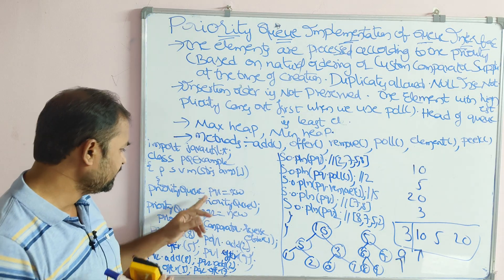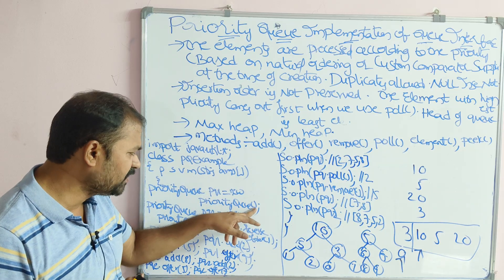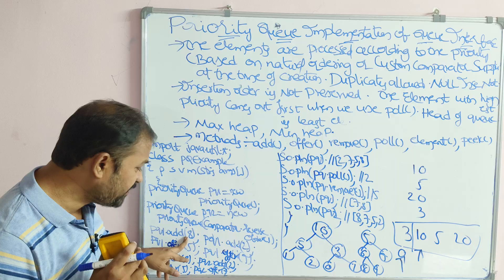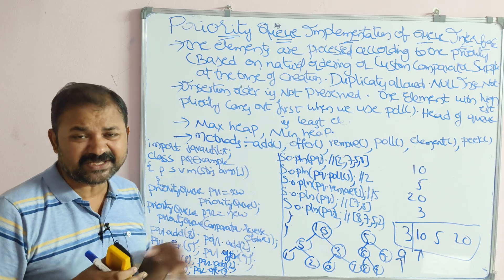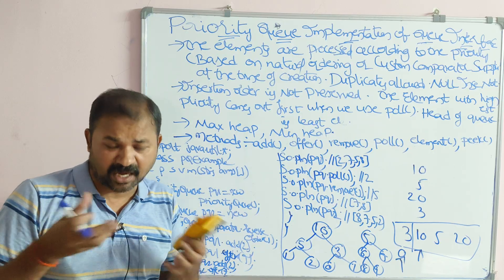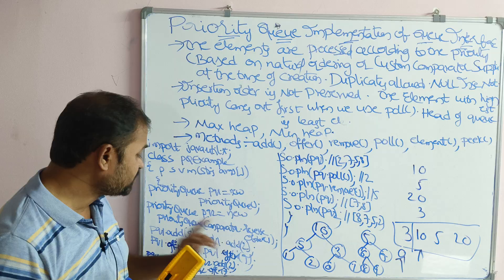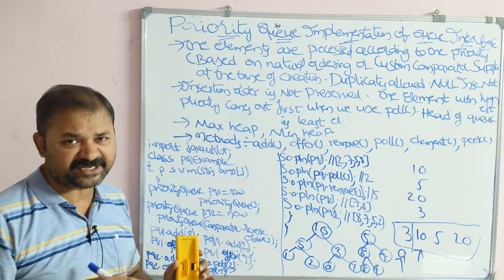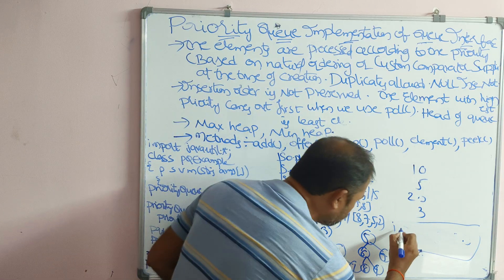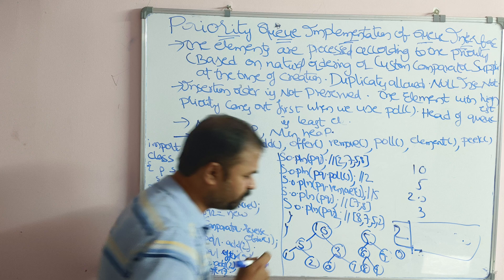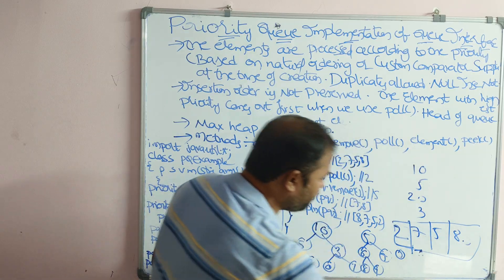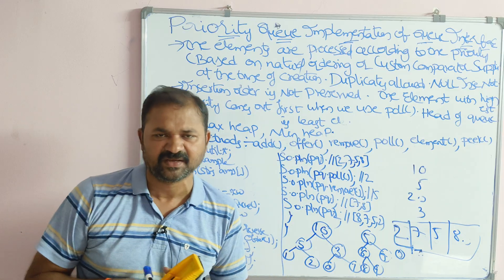Let us see the program. We have two constructors — pq1 for natural ordering and pq2 for comparator-based. We add elements to pq1: pq1.add(8), pq1.add(2), pq1.offer(5), pq1.offer(7). So we have four elements: 8, 2, 5, 7. Out of these, 2 is the smallest value, so 2 gets the highest priority with priority 0 and becomes the head. The remaining elements — 7, 5, 8 — may be arranged in any order; there is no constraint on their relative ordering.